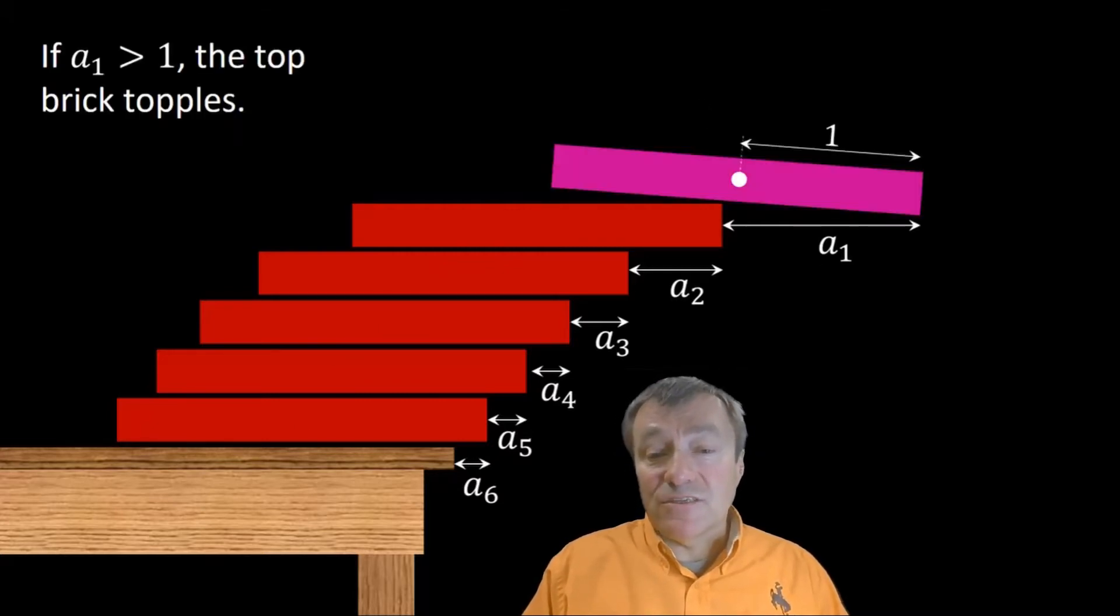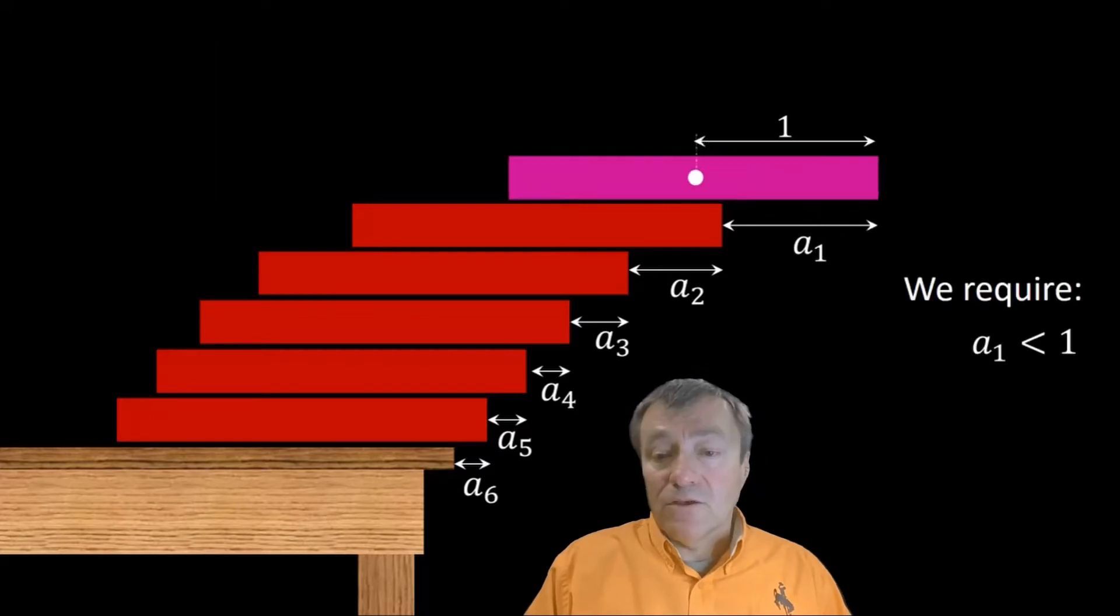And if the first distance A1 is bigger than one, then the top brick is going to fall over because its center of mass is beyond the second brick. So, if I don't want the top brick to fall over, I'll require that A1 is less than one. By the way, if I take A1 to exactly equal one, then you could say the top brick might manage to balance, but just barely. It would be unstable, just a single breath of air, or someone in the next room slamming a door, and the thing will fall over. So, I'm going to require A1 to be strictly less than one.